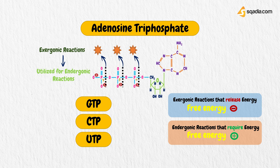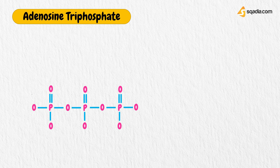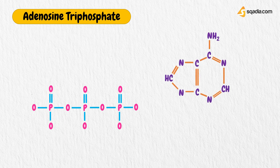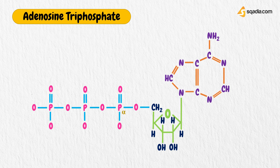Let us discuss the structure of ATP first. In ATP, a chain of three phosphate residues is linked to the 5'-hydroxyl group of the nucleoside adenosine. These phosphate residues are termed alpha, beta, and gamma. The alpha phosphate is bound to ribose by a phosphoric acid-ester bond. The linkages between the three phosphate residues, on the other hand, involve much more unstable phosphoric acid-anhydride bonds.